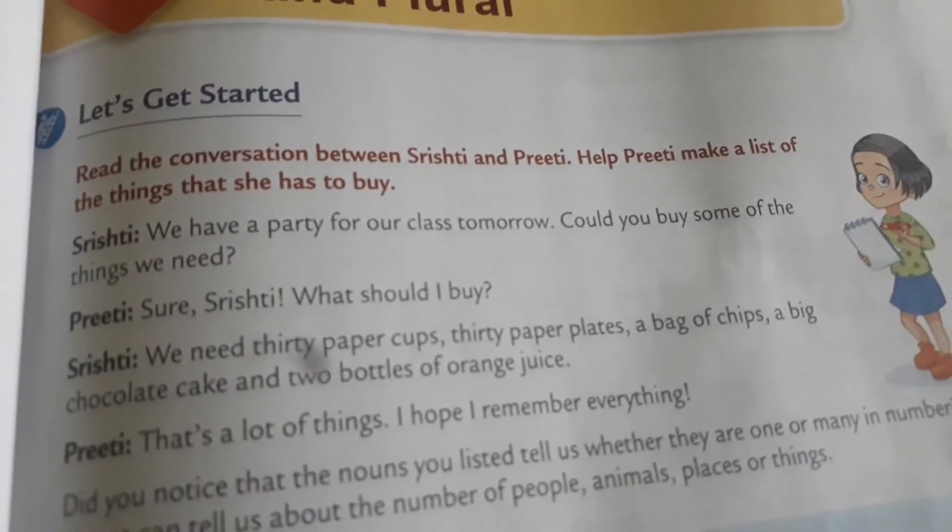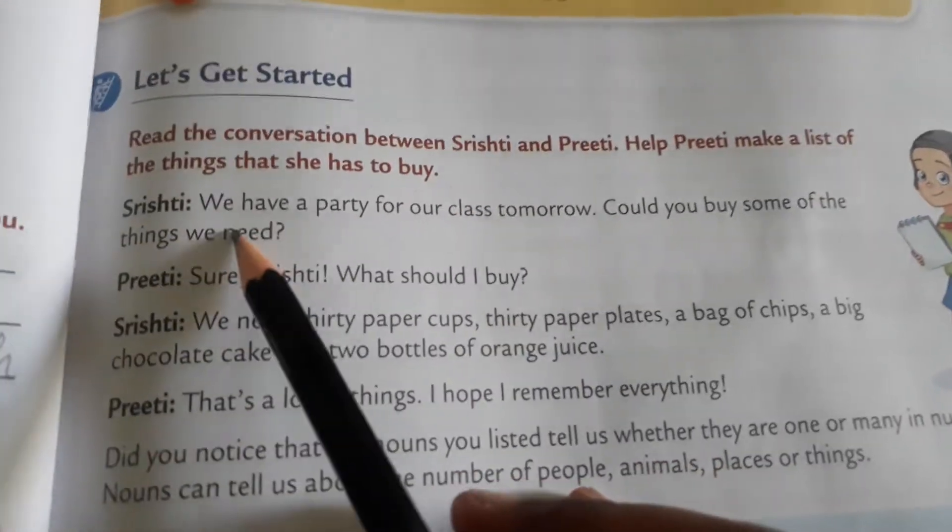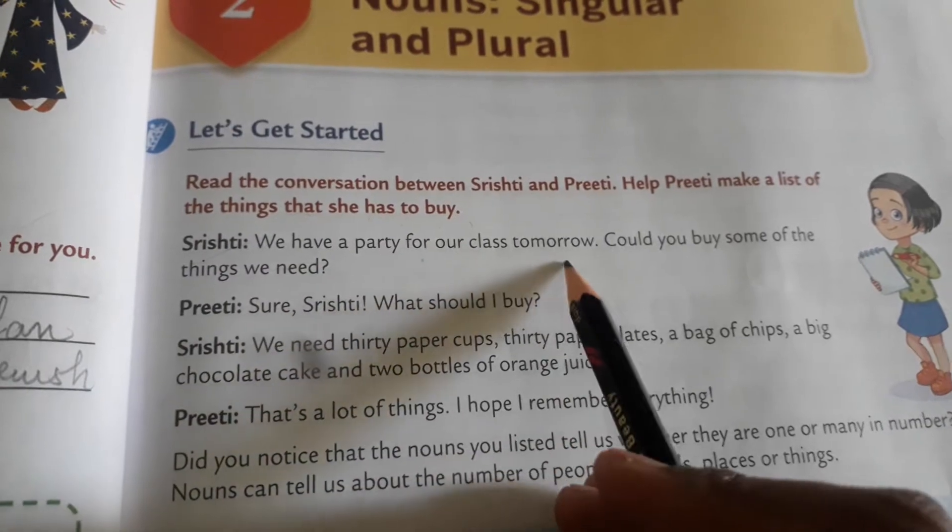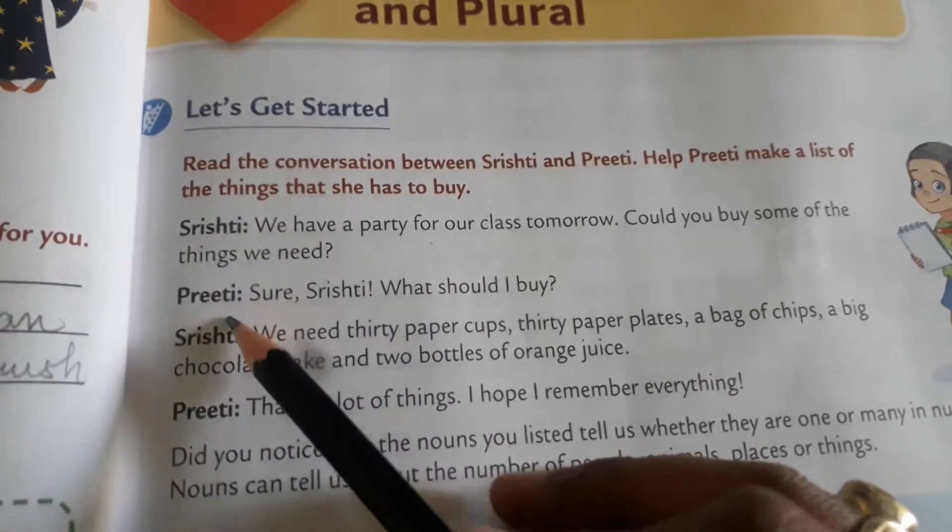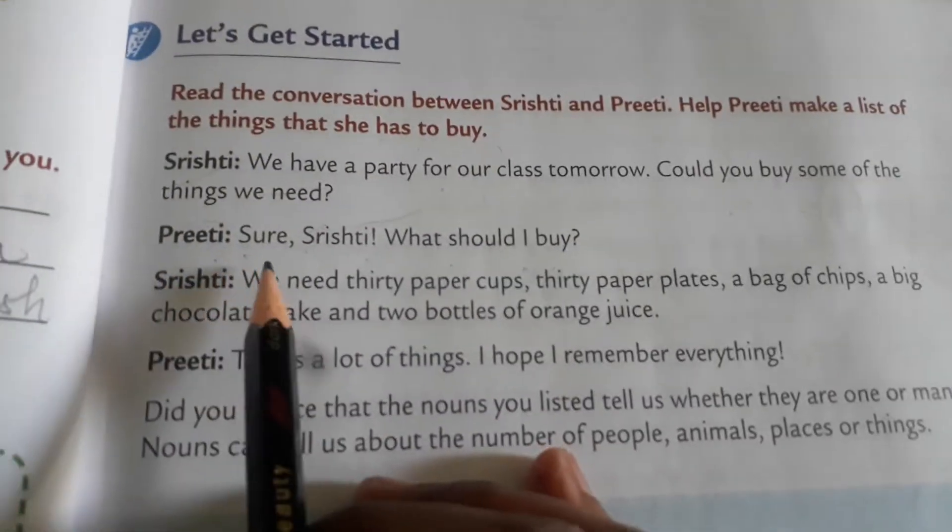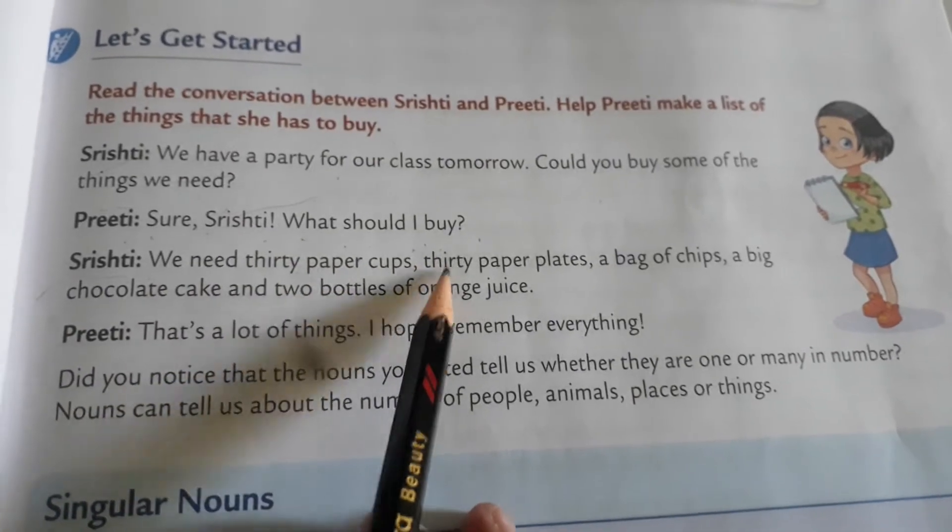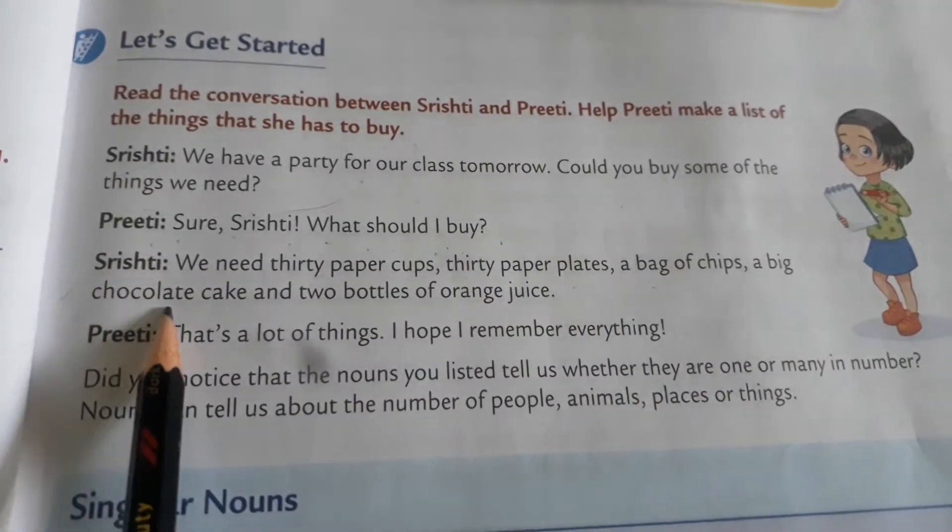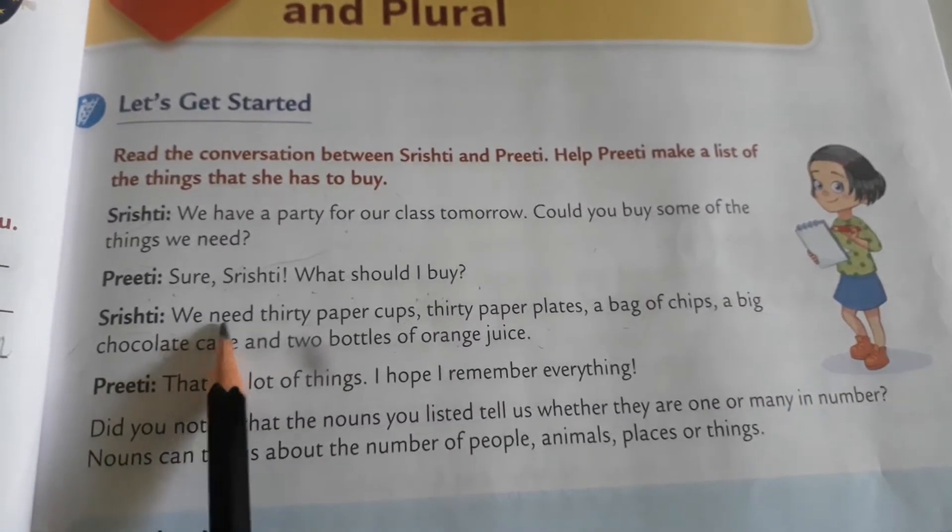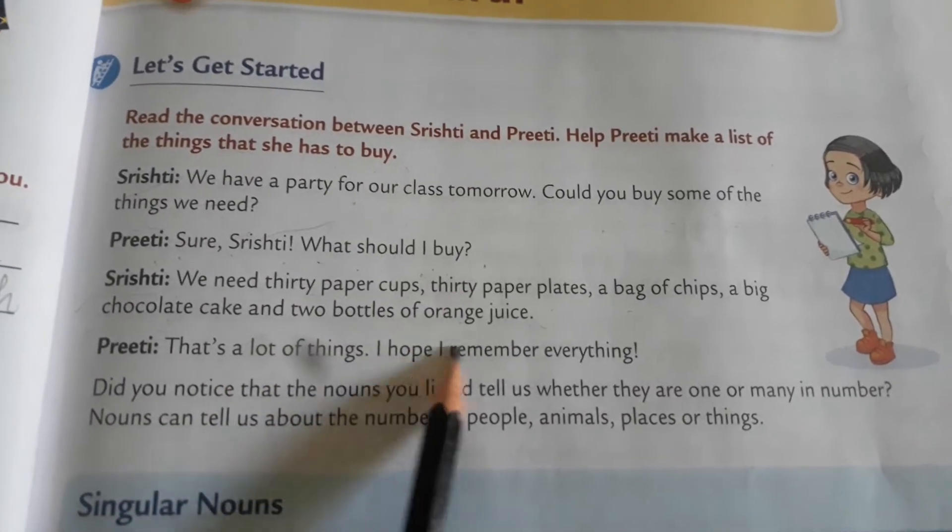Read the conversation between Srishti and Preeti. Help Preeti make a list of the things that she has to buy. Srishti: We have a party for our class tomorrow. Could you buy some of the things we need? Preeti: Sure Srishti, what should I buy? Srishti: We need 30 paper cups, 30 paper plates, a bag of chips, a big chocolate cake and 2 bottles of orange juice. Preeti: That's a lot of things. I hope I remember everything.